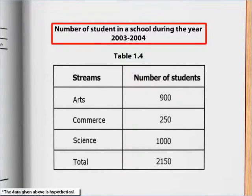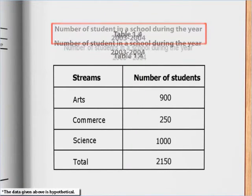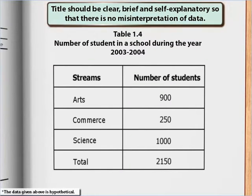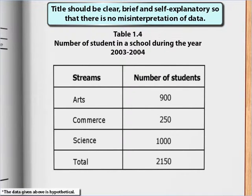The title finds its place preceding the table number or just below it. It should be clear, brief and self-explanatory so that there is no misinterpretation of data.